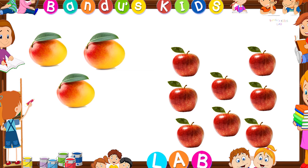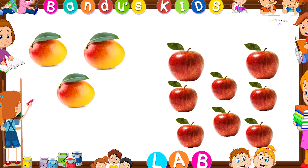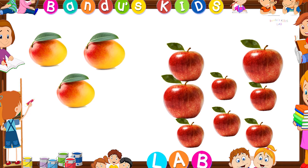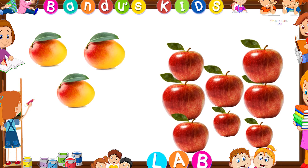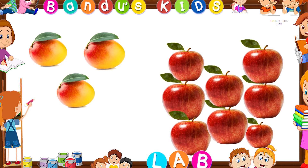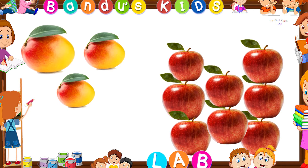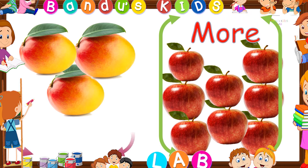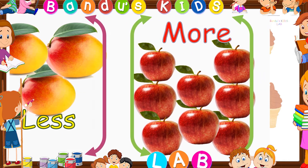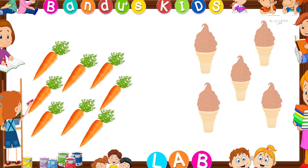Now look at this picture. Here are a set of apples and a set of mangoes. Let's count the apples first: one, two, three, four, five, six, seven, eight — here are eight apples. Now let's count the mangoes: one, two, three — here are three mangoes. The set of apples is the more one and the set of mangoes is the less one.